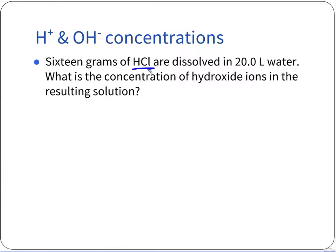We have hydrochloric acid, HCl. When it dissolves as an aqueous solution, it decomposes into H⁺ plus Cl⁻ — hydrogen ions and chloride ions. More precisely: HCl + H₂O yields H₃O⁺ + Cl⁻. We have 16 grams of HCl dissolved in 20 liters of water, producing hydrogen ions as an Arrhenius acid. We need the concentration of H⁺ ions.